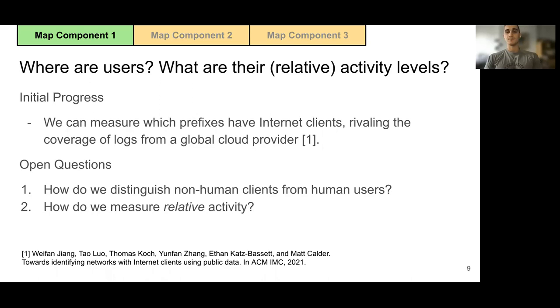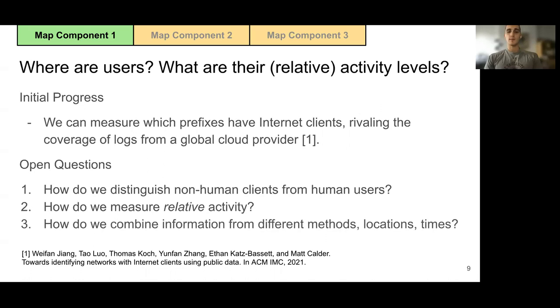Third, we may obtain information about relative activity from different measurement methods, countries, and times. How do we combine all this information, taking biases and changes into account?